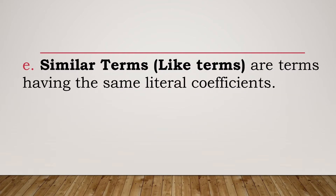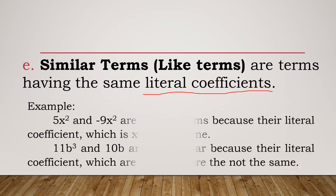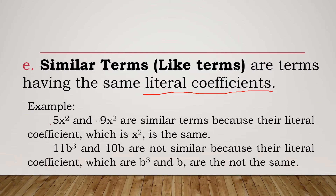We call terms in an algebraic expression like terms when they have the same literal coefficients. For example, 5x² and -9x² — notice they have the same variable and the same exponent on that variable, so they have the same literal coefficient. Therefore, 5x² and -9x² are similar terms or like terms.